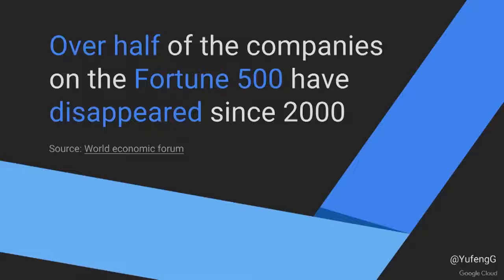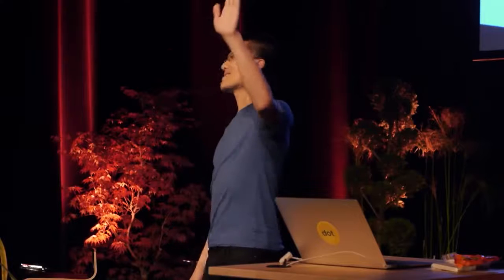Over half of the Fortune 500 globally have disappeared — the company is kaput, gone — since 2000. And so, how can we not have that situation? What will happen to the other half? It's the companies who embrace AI. These startups who are — well, nowadays, all the startups are saying, we are an AI startup.